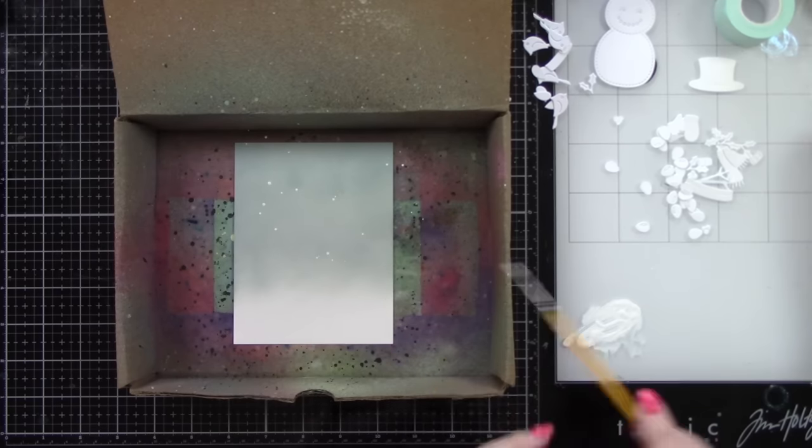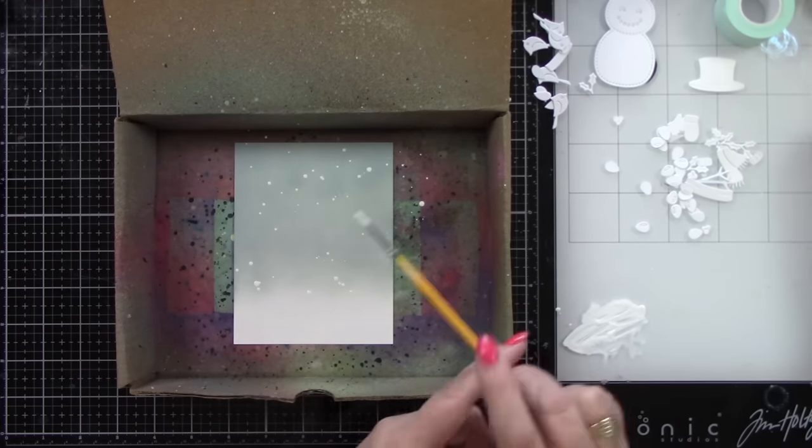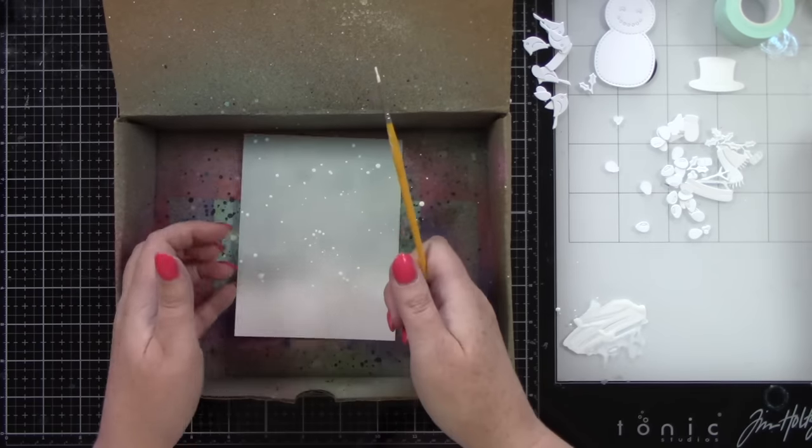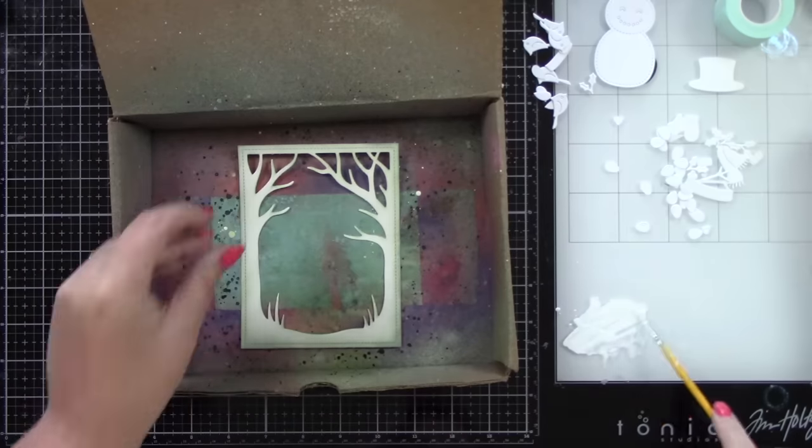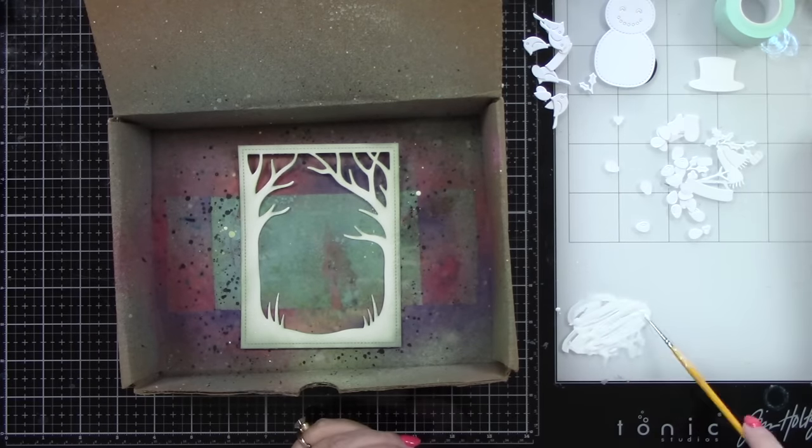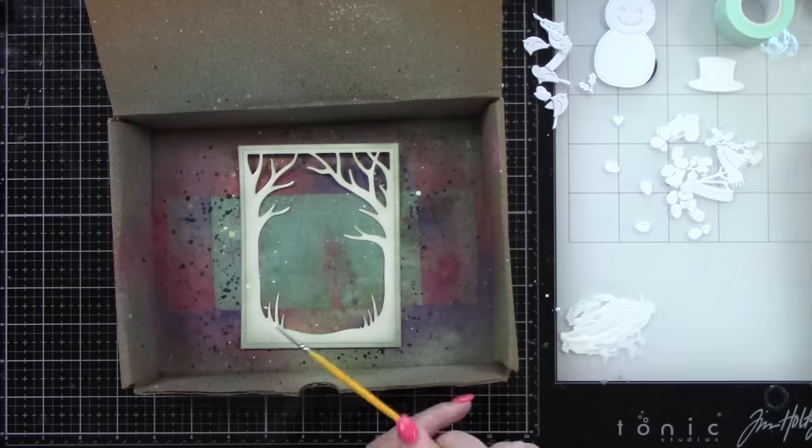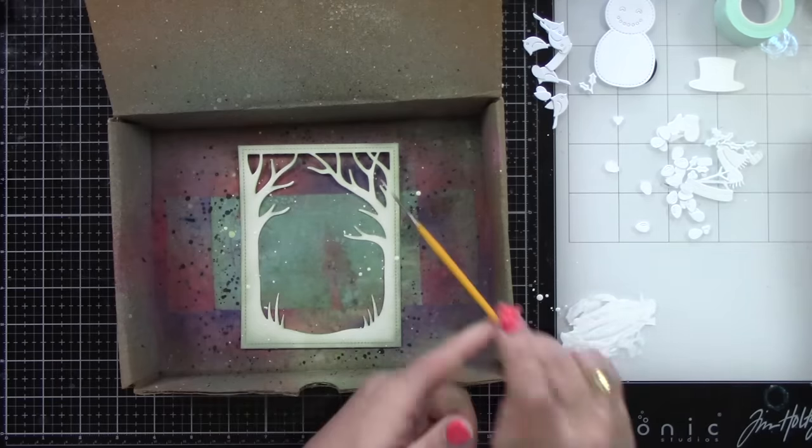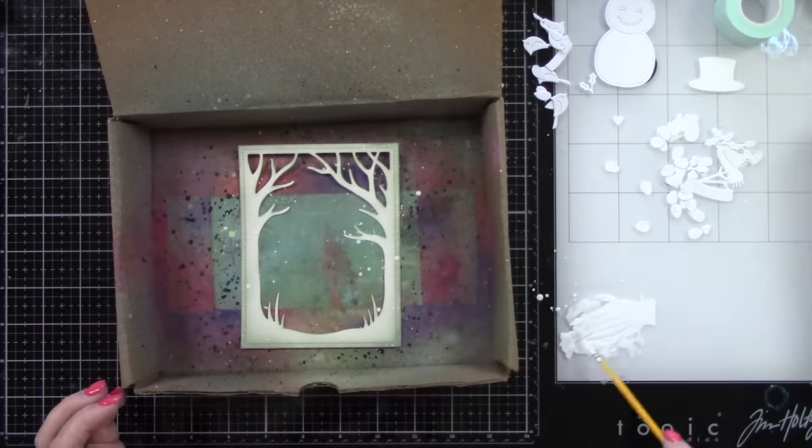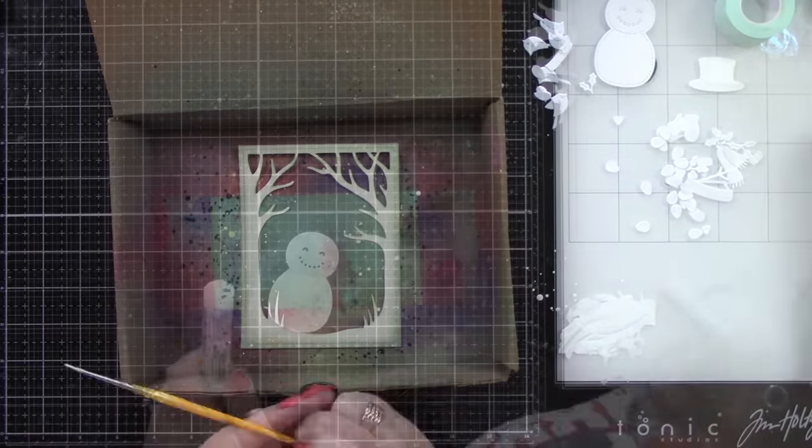Then on my work surface I have some white acrylic paint and a little bit of water and I'm splattering that background. I'm also going to splatter the tree die as well, the Spooky Forest die. I want it to have a little bit of falling snow or the effects of falling snow.